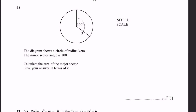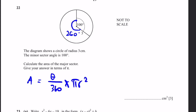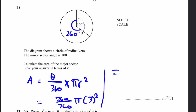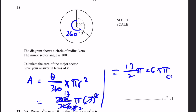Question 22. A circle has radius 3 cm. The minor sector has angle 100 degrees. Calculate the area of the major sector, giving the answer in terms of π. The major sector angle is 360 − 100 = 260 degrees. Area = (260/360) × π × 3² = (13/18) × 9π = 13π/2 = 6.5π cm². We leave the answer in terms of π since this is a non-calculator paper.